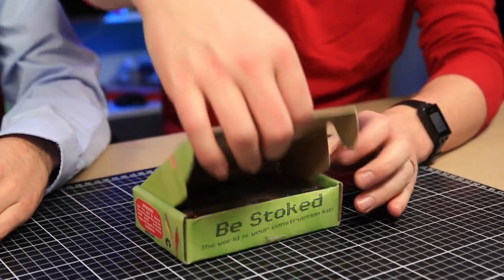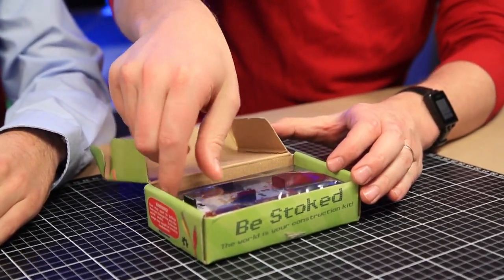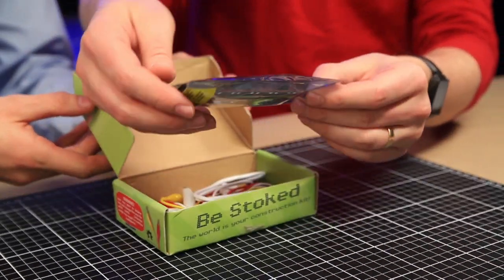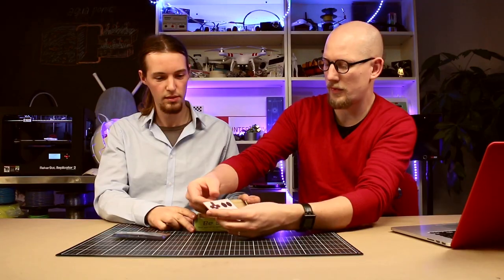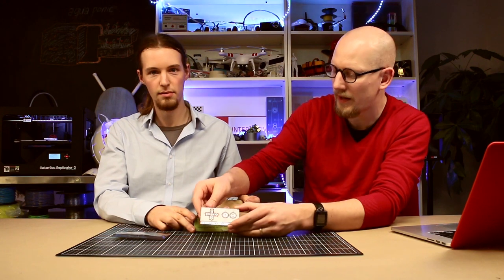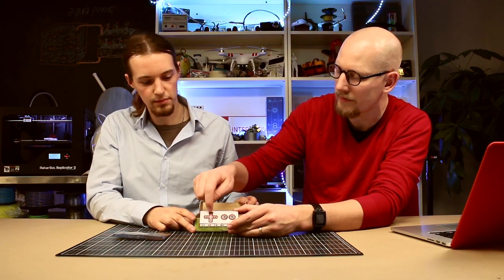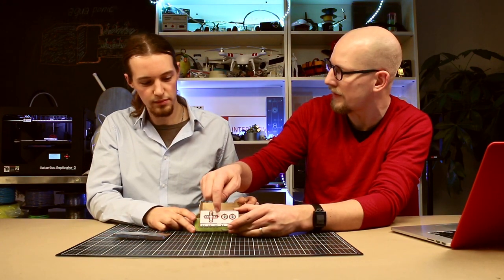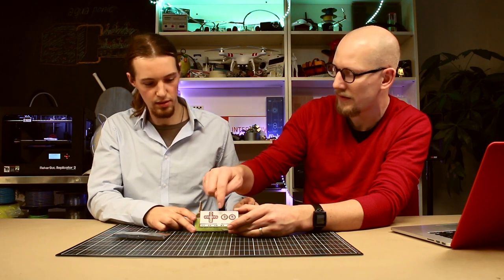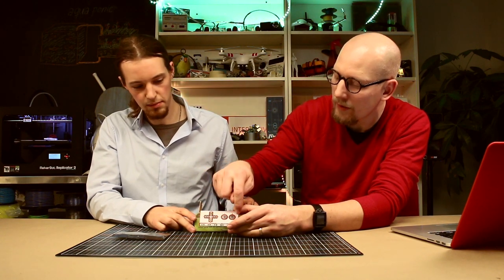So if we have a look inside of this box, we have the actual circuit board of the Makey Makey, and it has some different parts. It has the cross here for the arrow keys, and here we have the spacebar and click.